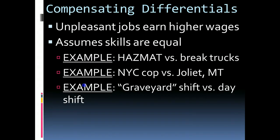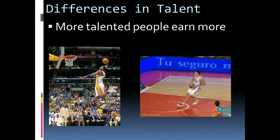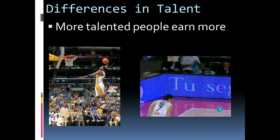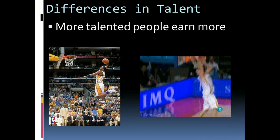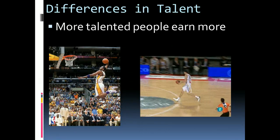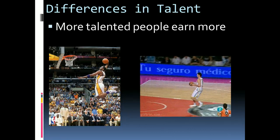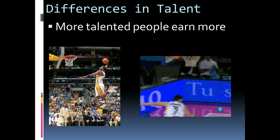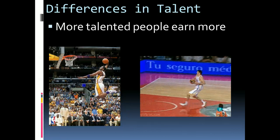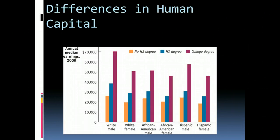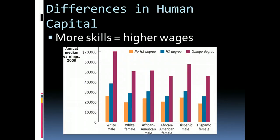Another reason why wages may be different is because some people are more talented than others. Kobe Bryant is a far more talented basketball player than Darko Milicic, so those who are more talented bring in more value and therefore get a higher wage rate. Differences in human capital also matter — the more skills and education you have, the more productivity you offer, and therefore the higher a wage you can command because you're bringing in more value for your company than somebody else.